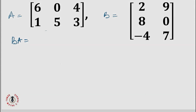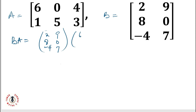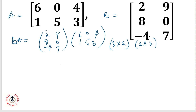The last part wants us to find B multiplied by A. Here B comes first, so we have B as a 3 by 2 matrix multiplying A, which is a 2 by 3 matrix. The number of columns in B is 2, which equals the number of rows in A, which is also 2. So the product will be a 3 by 3 matrix.